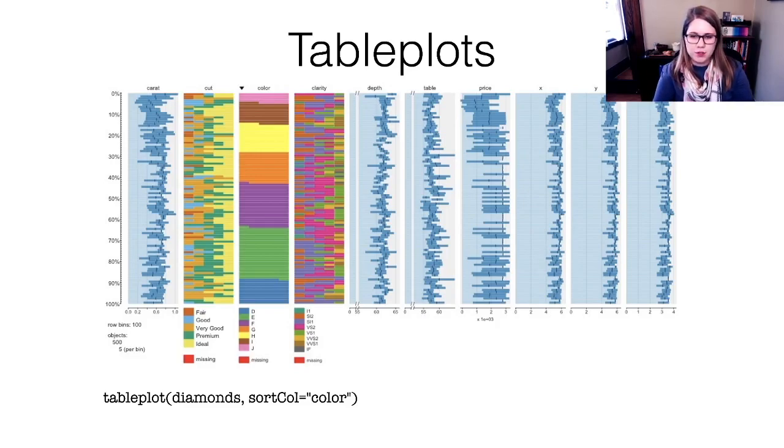And you can sort by a different variable. By default, it sorts by the first one, but I could sort by color. And then I might be able to see some trends in like depth based on color or clarity based on color, for example.